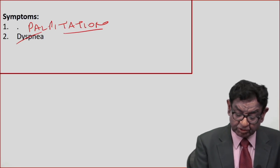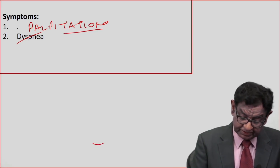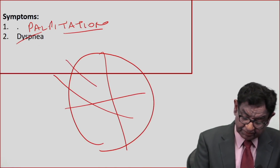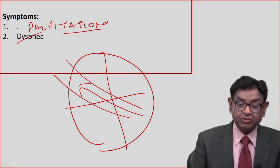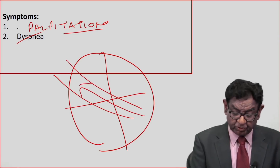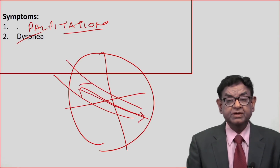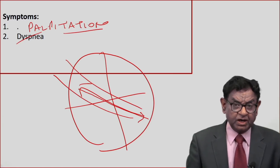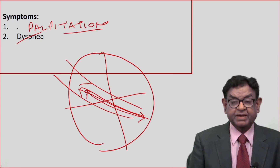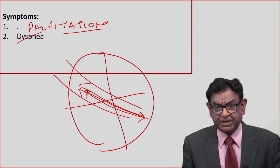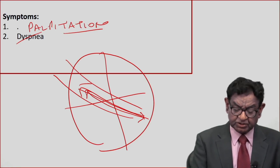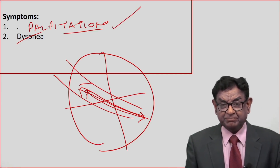To understand the basic concept: normally blood goes into the aorta in systole, but in AR blood goes out in systole but comes back in diastole. In the next systole, a large amount of blood is pushed into the aorta again, and it comes back. So in every beat, the heart has to push a large amount of blood — that is why the commonest presenting symptom is palpitation.